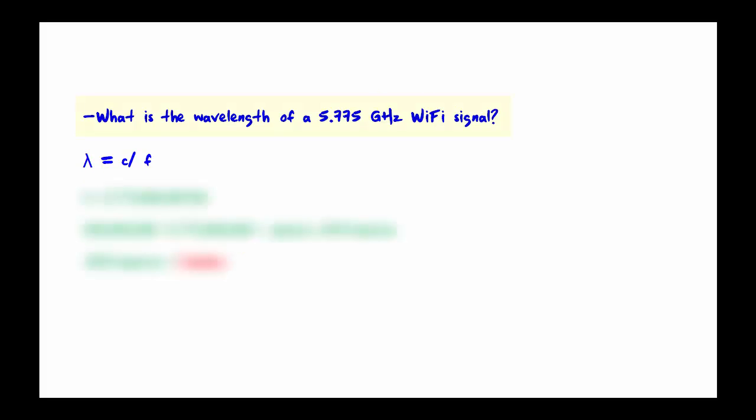So here is another example. What is the wavelength of a 5.775 gigahertz Wi-Fi signal? Again, we use the same formula. Start by taking the frequency in hertz, which is this number here. Then you take the speed of light, divide it by the frequency, and you end up with 0.0519 meters. You take meters, translate it to inches, and you see that the wavelength is about 2 inches. That is shorter than the previous example, which was about 4 inches. So you can see that the higher frequency produced the shorter wavelength.